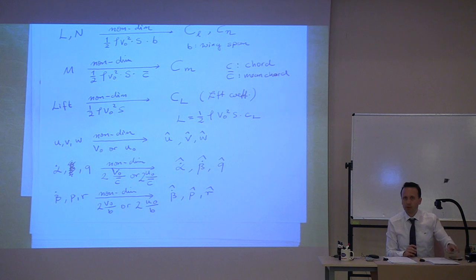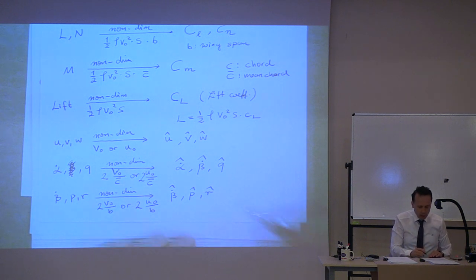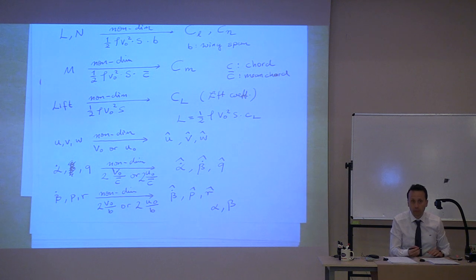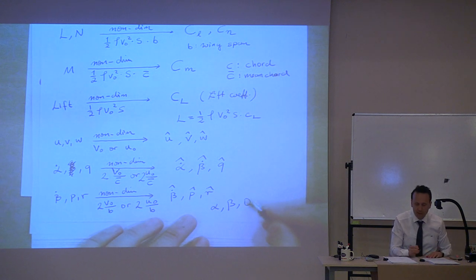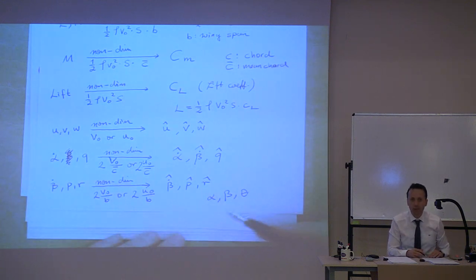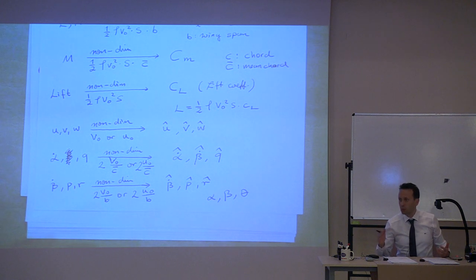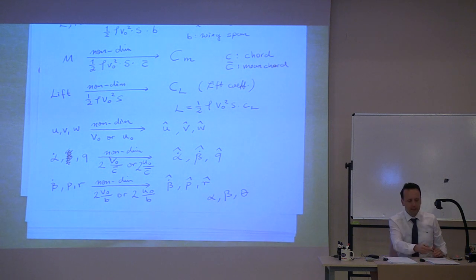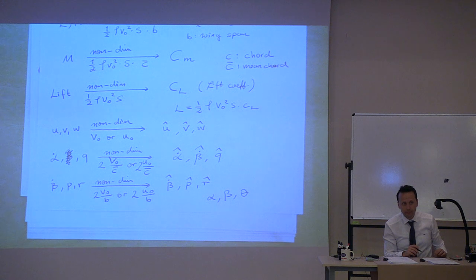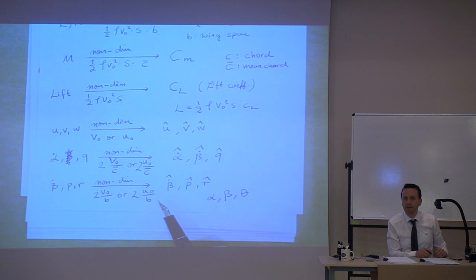Someone asked during the break — a very good question — how about non-dimensionalizing the angles alpha, beta, or even theta? How do you non-dimensionalize angles? Well, if you use these angles in radians, it's already non-dimensional. Radians are non-dimensionalized with 2π — it's already non-dimensional. So for alphas and betas, you don't really need to non-dimensionalize again if you use radians as the unit.